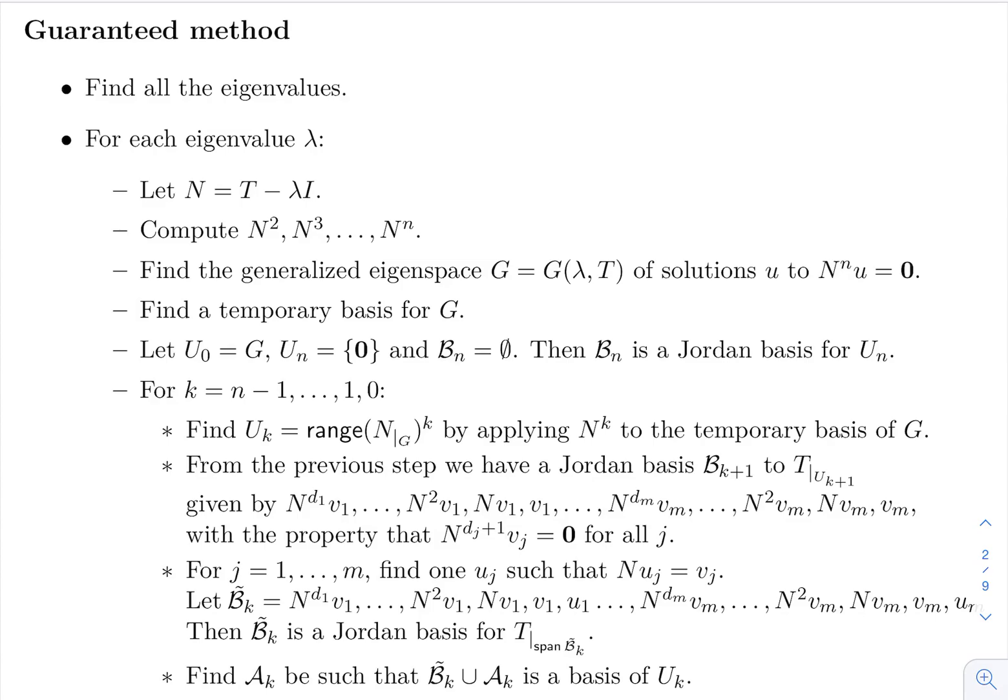But very quickly, how does this guaranteed method work? Well, you have to find eigenvalues, you can never get rid of this, of course. And then for each eigenvalue, we define the nilpotent operator, and we compute the matrix corresponding to this nilpotent operator to all the powers of it. And then we solve this equation to find the basis for the generalized eigenspace, and we use that basis. That basis has very little to do with the basis we're going to use in the end, it's just a temporary thing that we use to make computations.